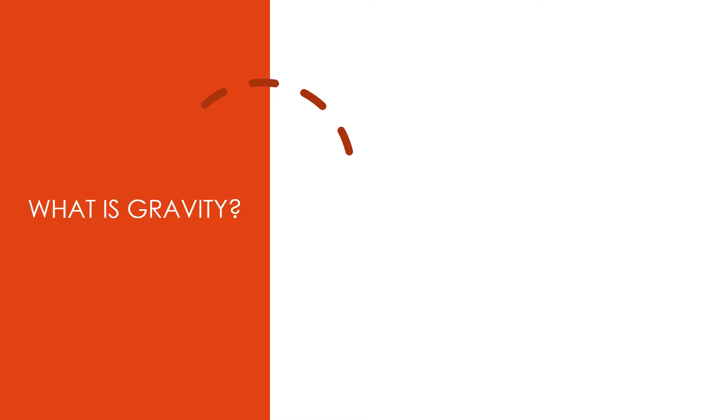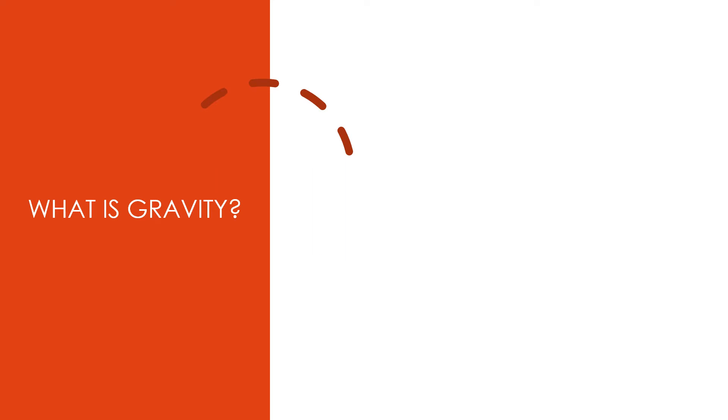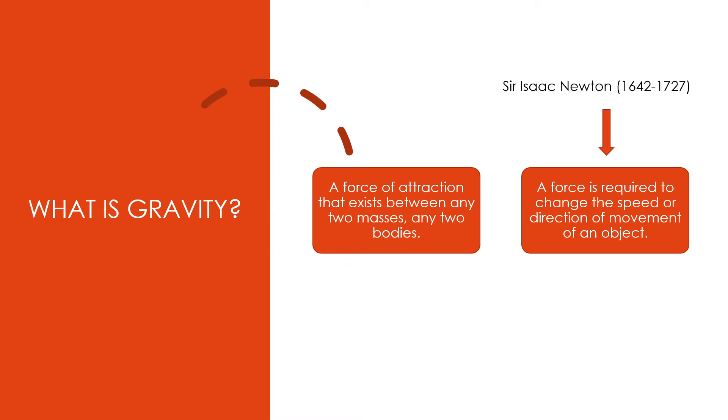Next, what is gravity? Gravity is a force of attraction that exists between any two masses or any two bodies. Sir Isaac Newton discovered that a force is required to change the speed or direction of movement of an object. He realized that the force called gravity must make an apple fall from a tree, or humans and animals live on the surface of our spinning planet without being flung off.